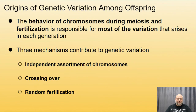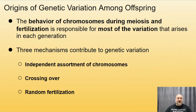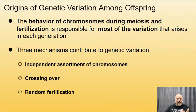The behavior of chromosomes during meiosis and fertilization is responsible for most of the variation that arises each generation. Though original variations come from mutations, most variation in a given generation comes from different combinations of alleles already present — just think about differences among siblings. Three mechanisms contribute to genetic variation: one, independent assortment of chromosomes during meiosis; two, crossing over during meiosis; and three, random fertilization — which sperm fertilizes which egg.